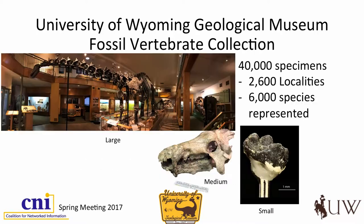At the University of Wyoming, I want to give you some background on the collection itself. This is your typical natural history collection or dinosaur collection, if you want to call it that. They have large specimens like the brontosaurus over here on the left, but we also have about 40,000 specimens, and a lot of things are not featured in the museum itself, so they're not available for public display. Users don't know what they are; visitors can't see them.